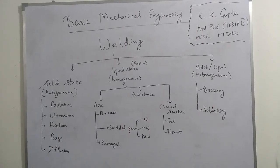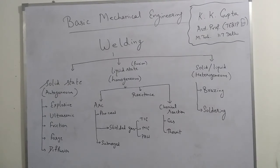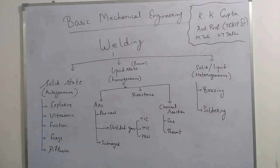Shielded gas welding has different types: tungsten inert gas welding, metal inert gas welding, and plasma arc welding. Chemical reaction welding can be classified as gas welding and thermite welding.